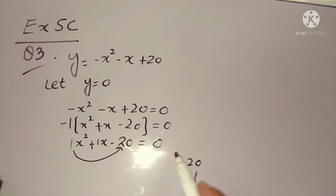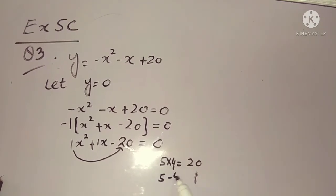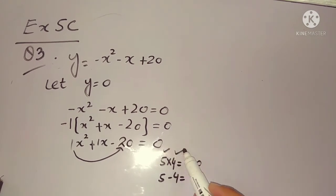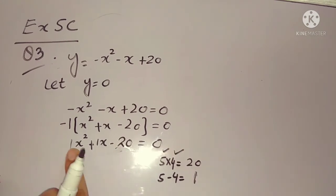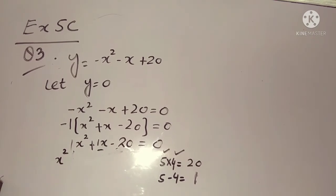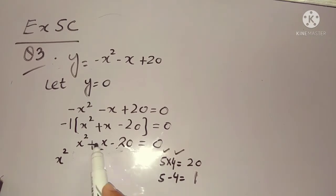To find the values, the equation given is y = -x² - x + 20. To find the values of x, we can assume that y = 0. If y = 0, the equation becomes: -x² - x + 20 = 0.